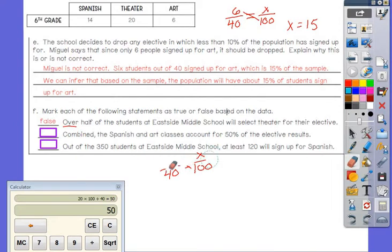The next one says, combined the Spanish and art classes account for 50% of the elective results. Spanish and art, I see Spanish is 14, art is 6. So if I add that together, I get 20 out of 40. Most of us already know that that is 50%. If I did not know it was 50%, I could do a proportion like this and solve. But it is 50%. So is that true or false? That is true.